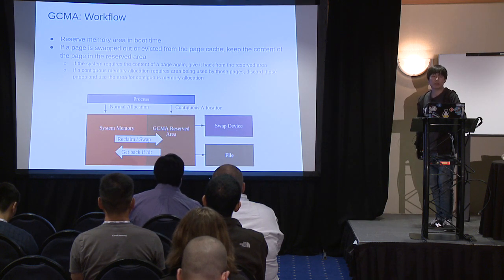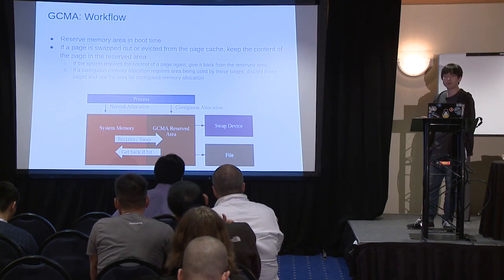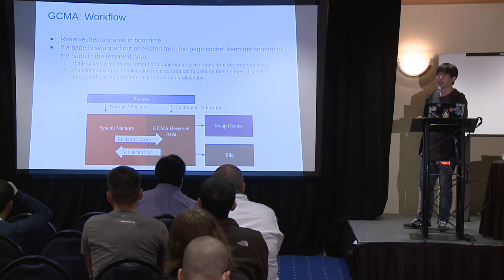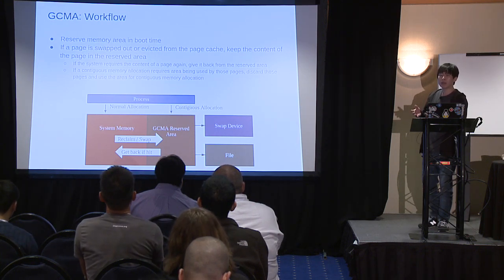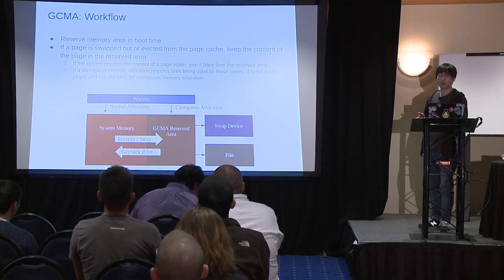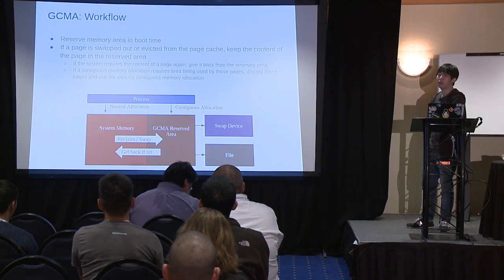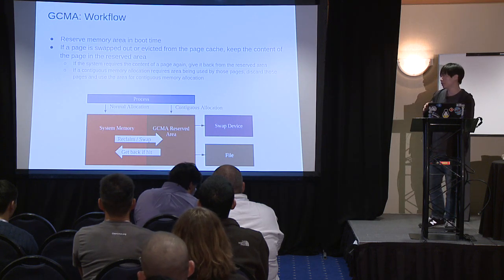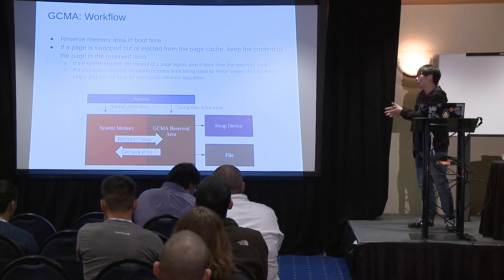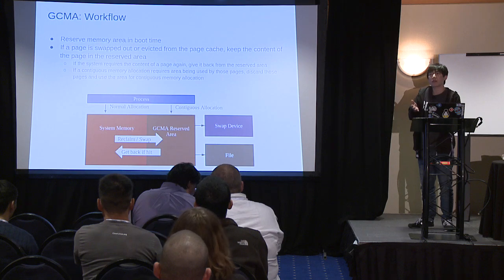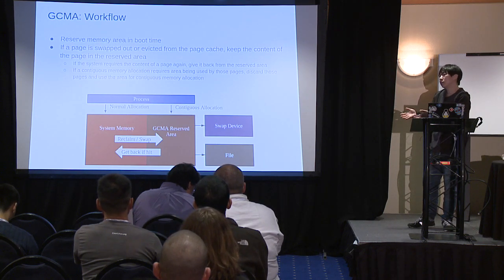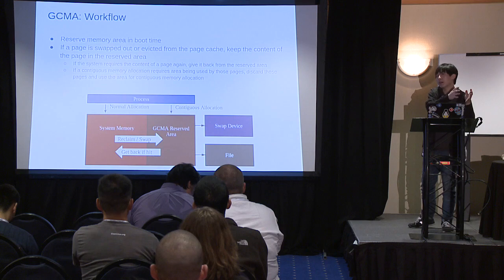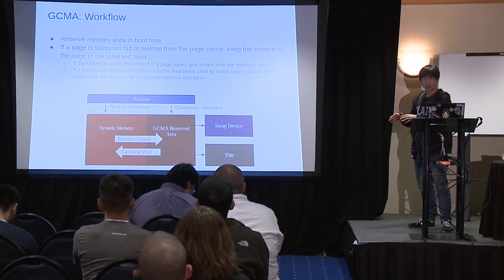The workflow of GCMA is very simple. We reserve the memory area at early boot time. If a page is swapped out or evicted from page cache, we keep the content of the page in the reserved area. If the system requires that content again, we return it from the reserved area. And if a contiguous memory allocation requires a page that has already been discarded, we say it is discarded — and the system can find the content from the swap device or storage, because the content was already written through or is already up to date.